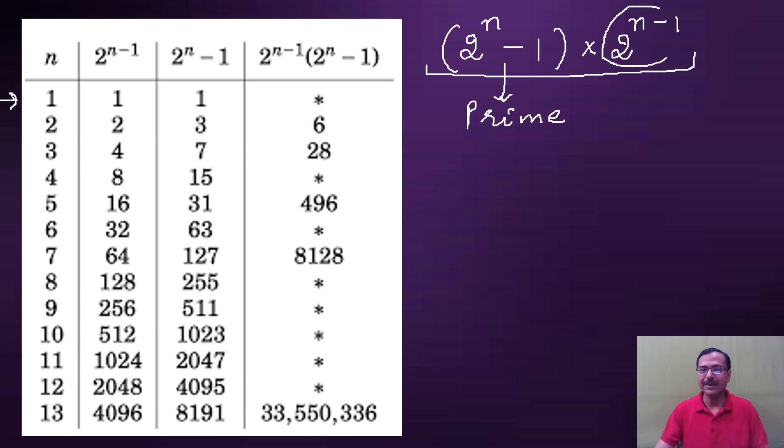This table demonstrates that. We started with n equal to 1. The value of 2 raised to power n minus 1 in this case will be 1 only, because 2 raised to power 0 is 1. I have listed down all the values of 2 raised to power n minus 1 for n equal to 1, 2, 3, 4 up to 13. Basically they are powers of 2. But the factor under consideration is 2 raised to power n minus 1, where minus 1 is in the base not in the power.